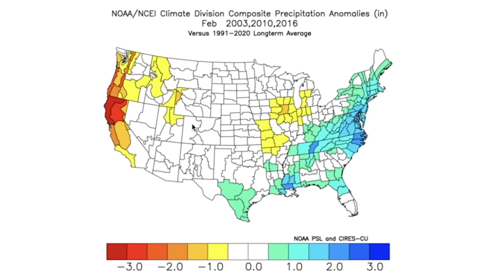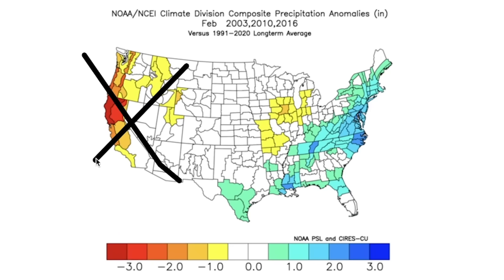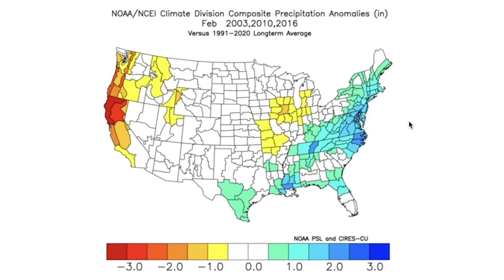February saw things open back up. Out west, conditions got closed off with drier results in a lot of these Februaries. Of course, this isn't a perfect predictor, but going month by month is interesting. We didn't see much precipitation out west, but we did see a lot more along the Gulf and east coast.